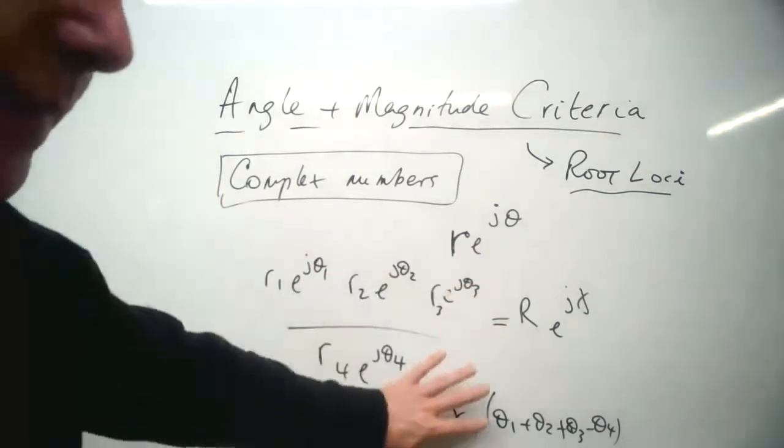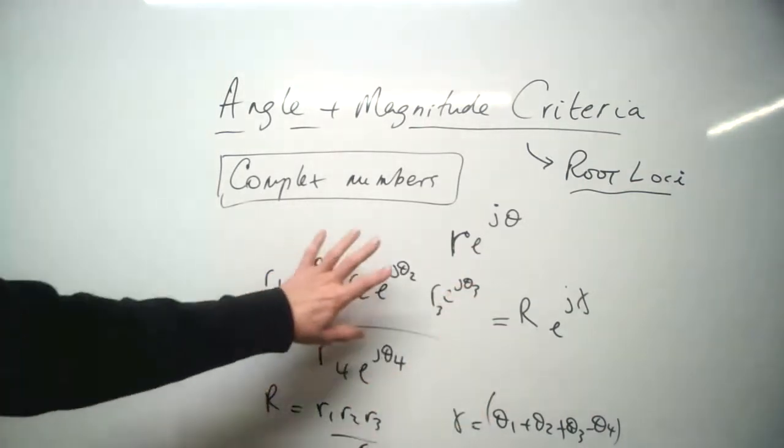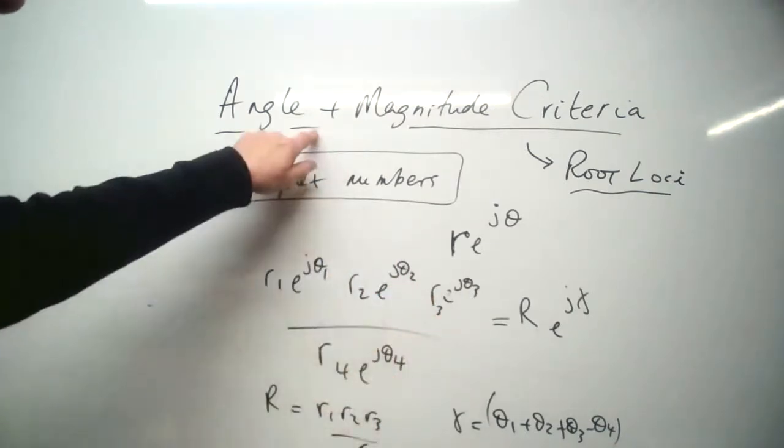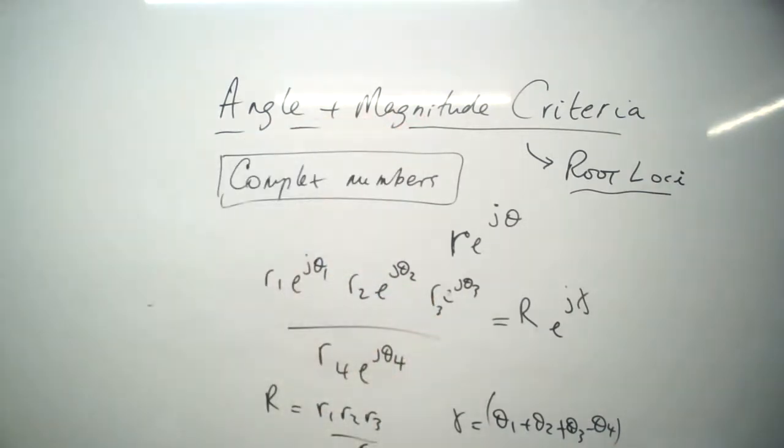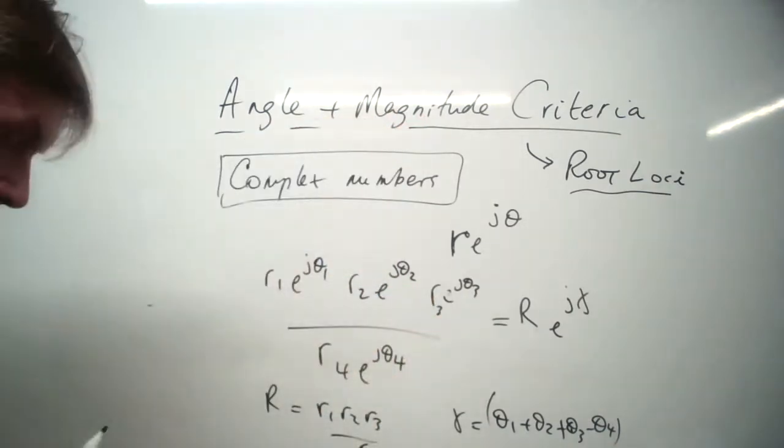So there is some advantage in the polar form of complex numbers for certain types of calculation, and it's this type of mathematics that we can use to derive the angle and magnitude criteria.